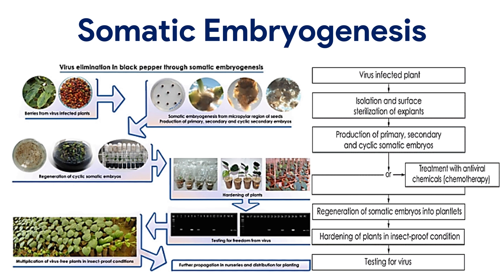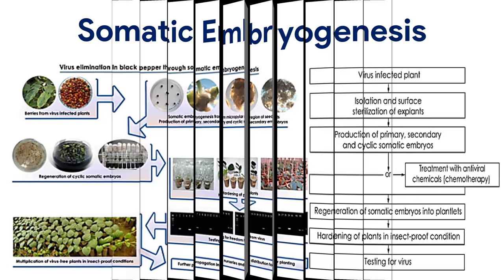Somatic embryogenesis is the development of plants from somatic embryos without fusion of gametes. It can be induced by various factors such as hormones, sucrose and ethylene under in vitro conditions. Somatic embryogenesis through cyclic somatic embryogenesis is one of the best methods for large-scale micropropagation of plants and is used for virus elimination from infected plant materials.